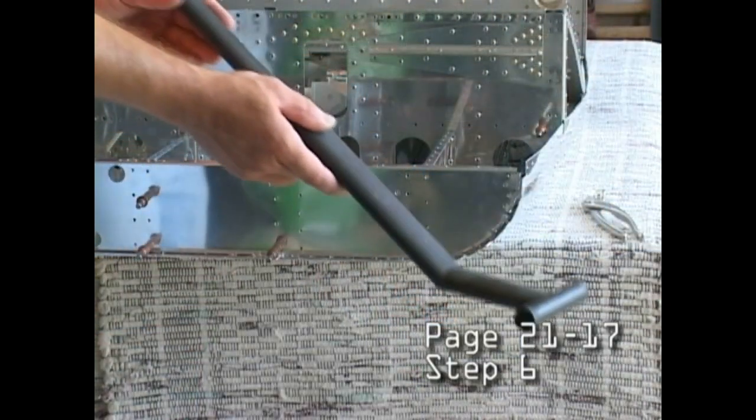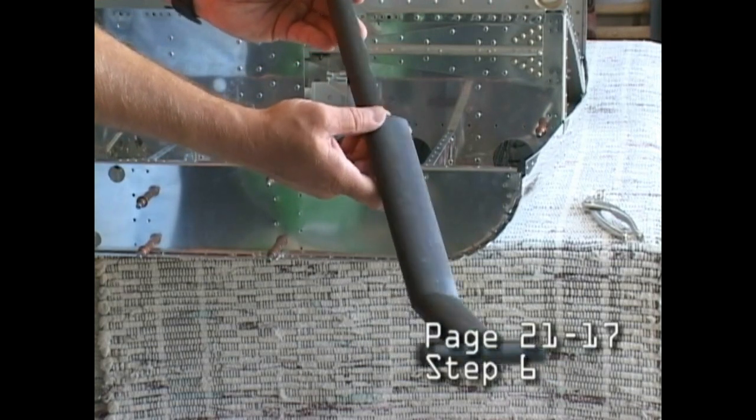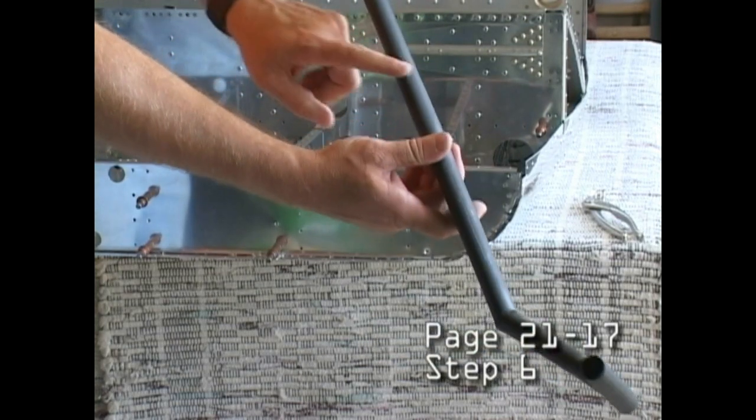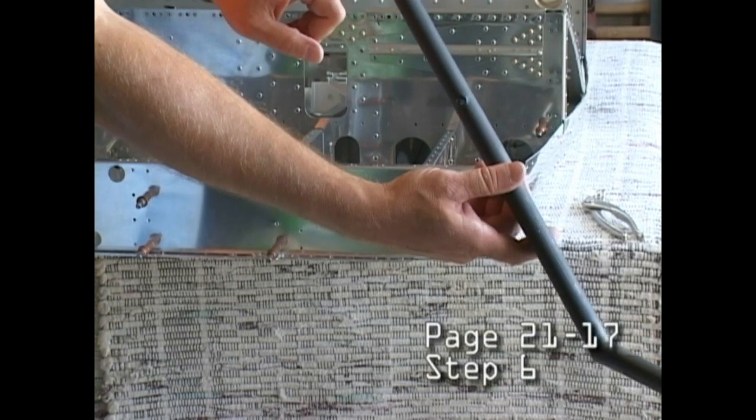In step 6, we're going to be lining up and attaching our step. This is a steel part, and it has two quarter-inch holes.